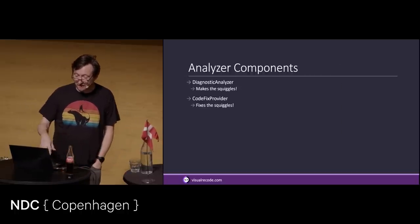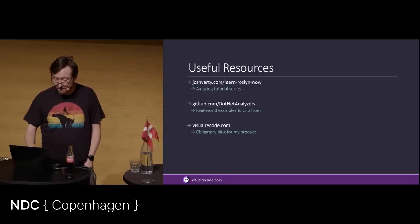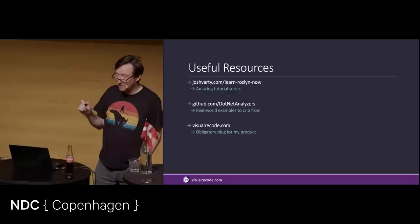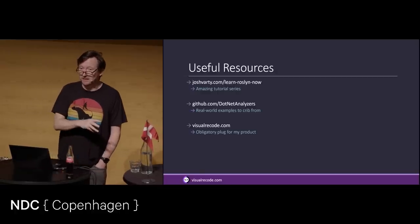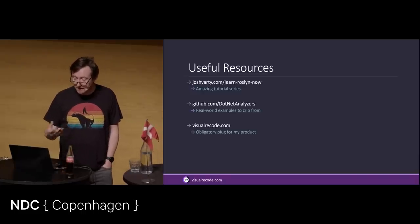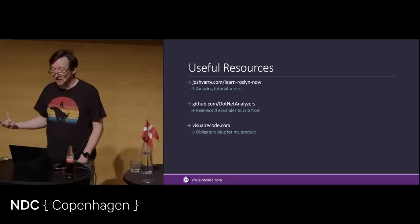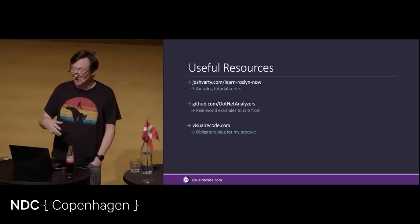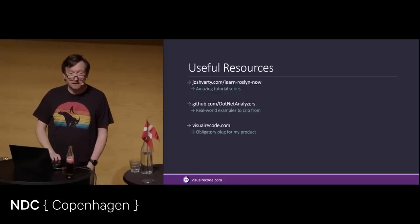You have your DiagnosticAnalyzer which makes the squiggles, and your CodeFixProvider that fixes the squiggles. It takes care of all the loading, the solution, and all that sort of stuff for you. Here are some useful resources: Josh Varty wrote a series of blog posts that are fantastic — slightly out of date, they don't have all the latest C# stuff, but it's the fundamentals, still pretty valid. At github.com/dotnet/analyzers, there's an organization with a bunch of real-world examples you can steal from. And if you're interested in a thing that automatically migrates WCF to gRPC, check out Visual Recode — that's what it tries to do. That's it. Thank you very much.